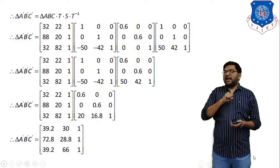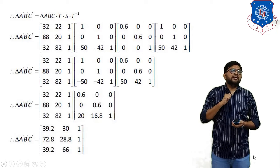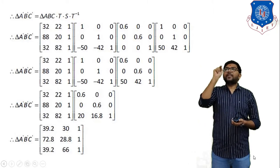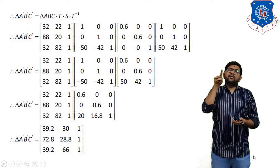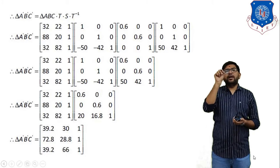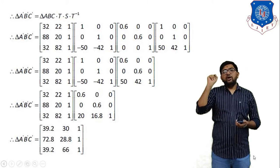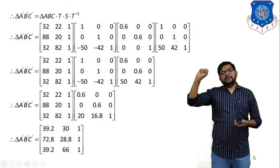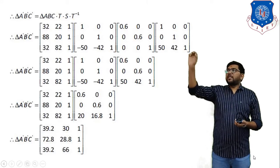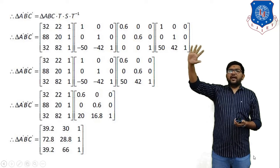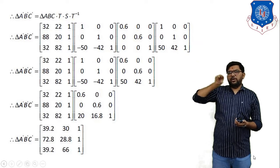S indicates scaling. The scaling factor given in the example is 0.6. The equation of scaling is [SX 0 0 / 0 SY 0 / 0 0 1]. With SX = SY = 0.6, the scaling matrix S is: [0.6 0 0 / 0 0.6 0 / 0 0 1]. We use this to scale the object after shifting it to the origin.